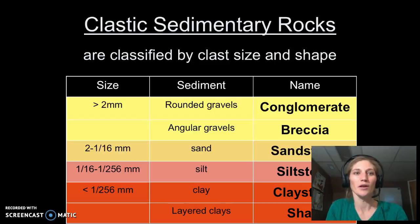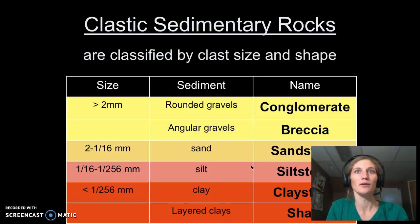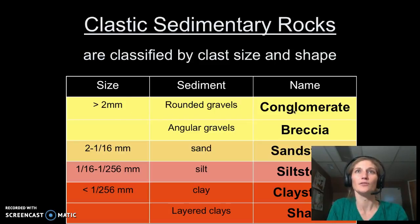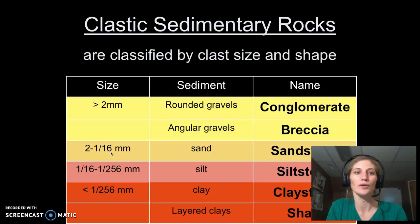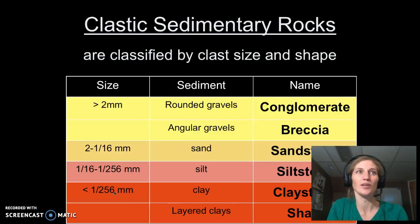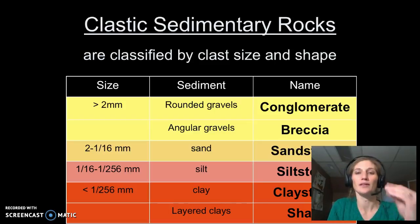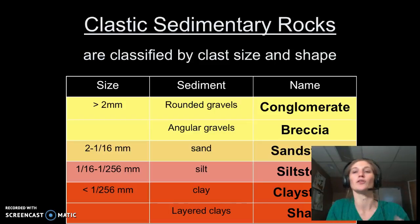Clastic sedimentary rocks are classified by their clast size and shape. If it's greater than two millimeters and rounded, it's conglomerate; if it's angular, it's breccia. Sands become sandstone — particles between two and one-sixteenth of a millimeter. Silts become siltstones, and anything less than one two-hundred-fifty-sixth of a millimeter is a clay-sized particle — you can get claystones, or if you see layers, shale.